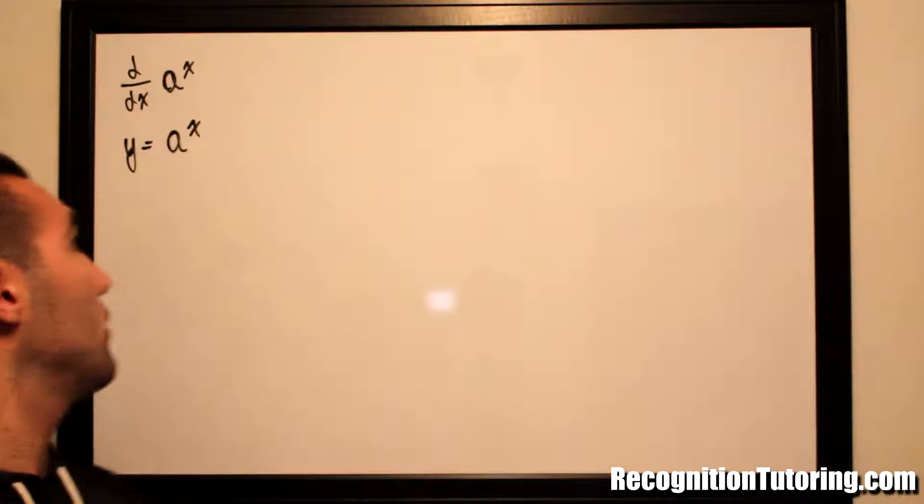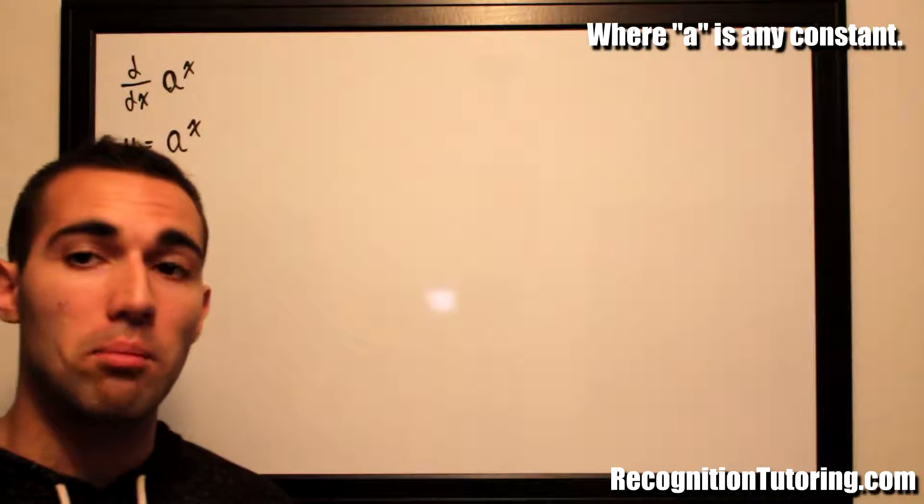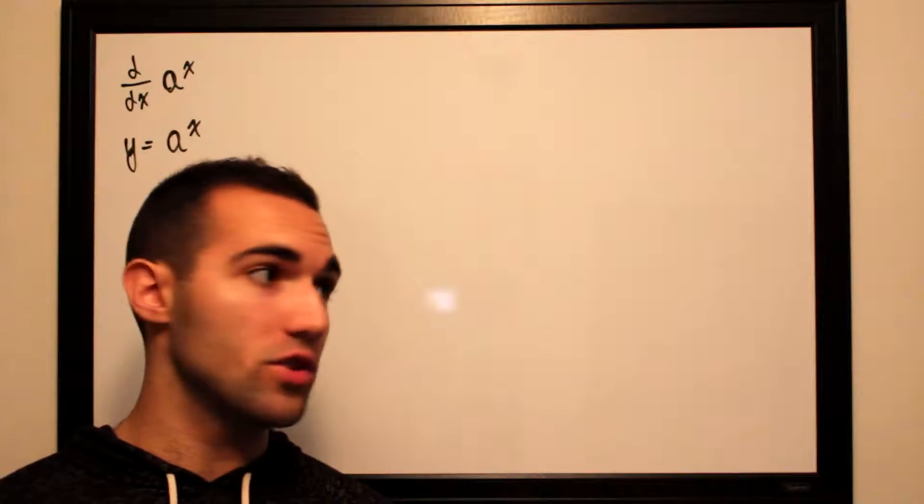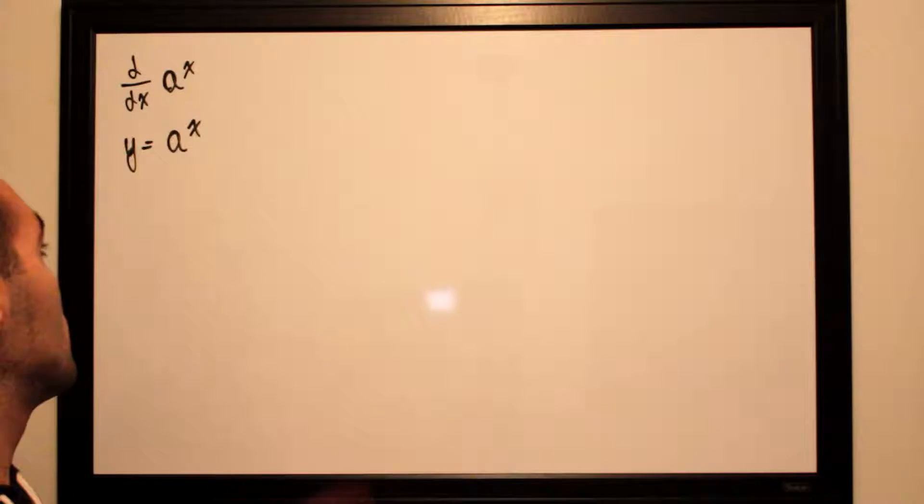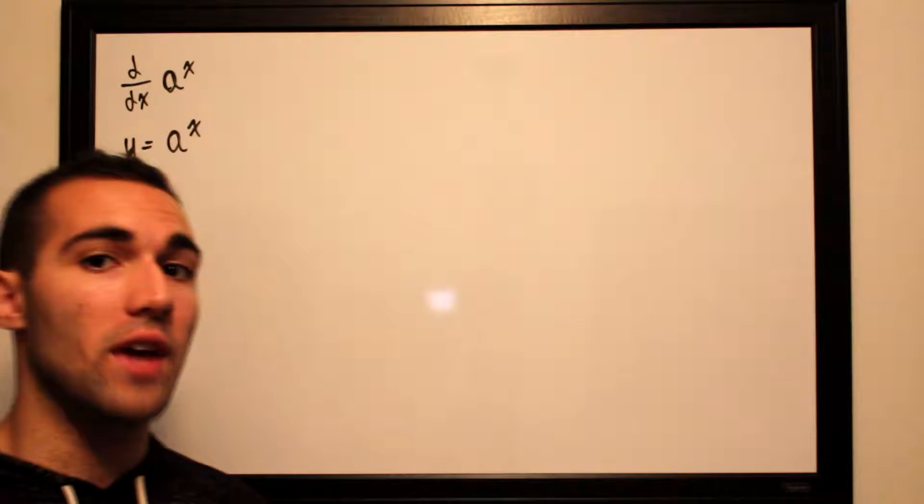In this video we will be taking the derivative of the function a to the x using implicit differentiation. The first thing we want to do is set our function equal to y, so y equals a to the x.